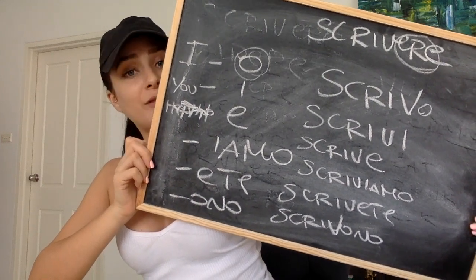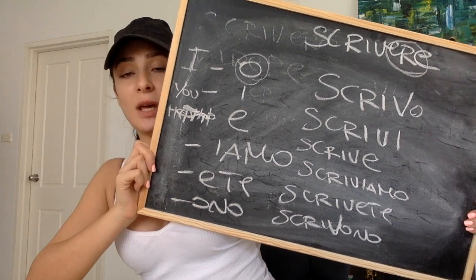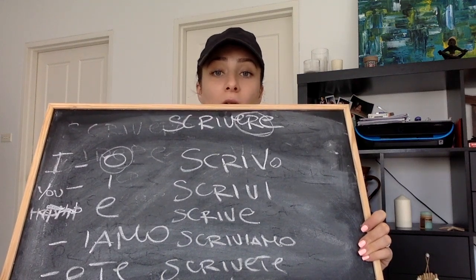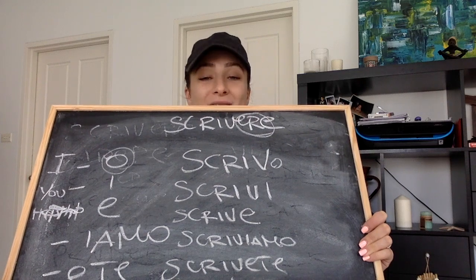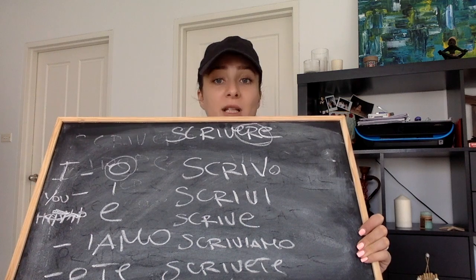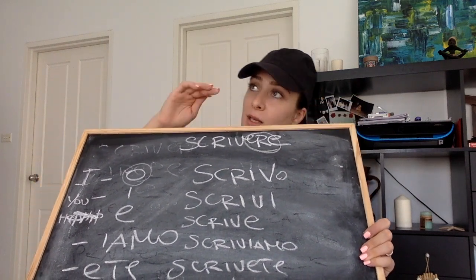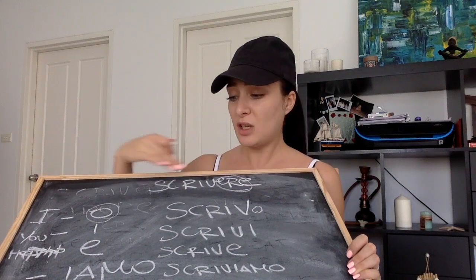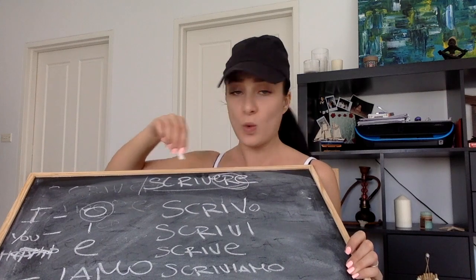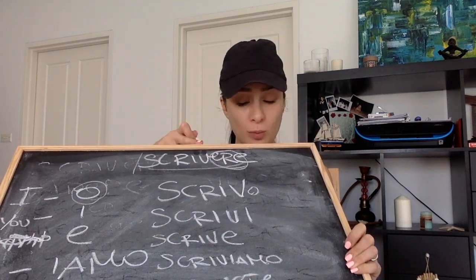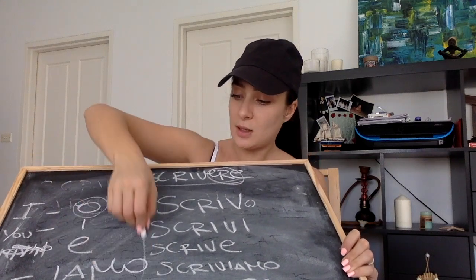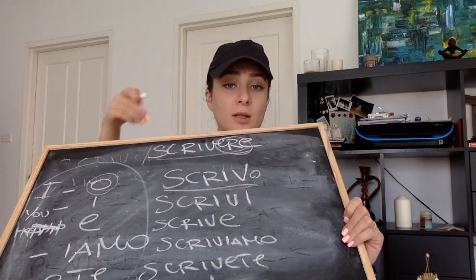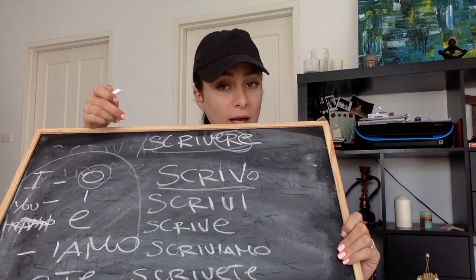These endings work with all verbs — it doesn't matter if they're regular or irregular. Regarding regular and irregular: some verbs can have a regular present tense but an irregular past participle, and some have a regular past participle but an irregular present. The irregularities can appear at different levels. A regular verb means that from the infinitive, using the standard rules and these endings, you get the correctly spoken verb. That covers the -ere group.